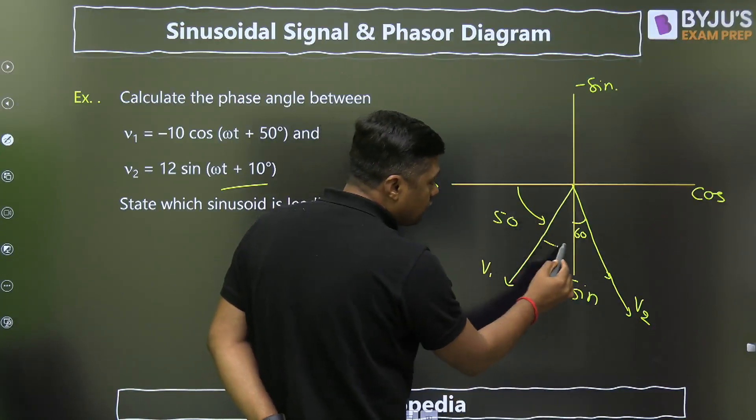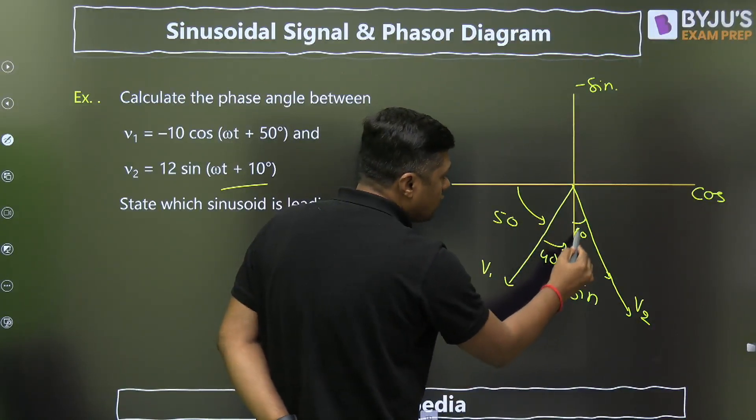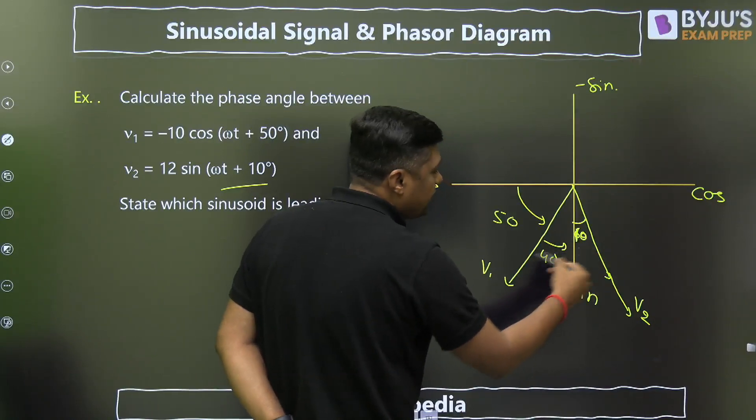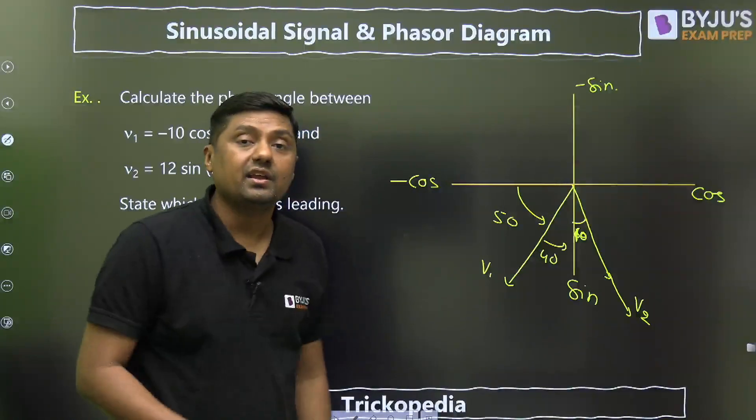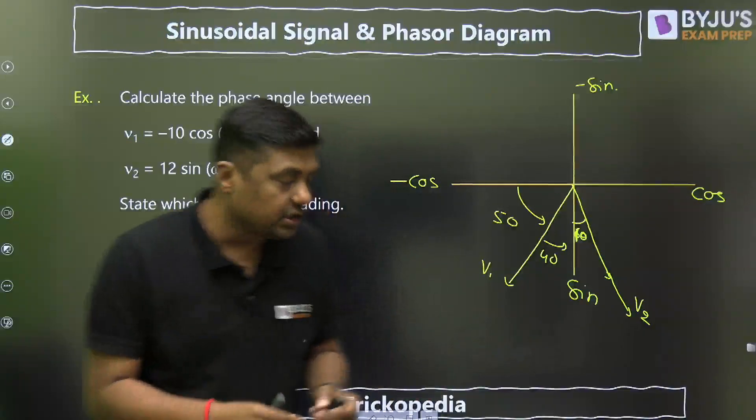Now, this angle is 40 and this angle is 10 degrees. What is the phase difference between these two? Directly it is visible, 50 degrees only. So that is why we can directly find the value here. So I think this is clear to you.